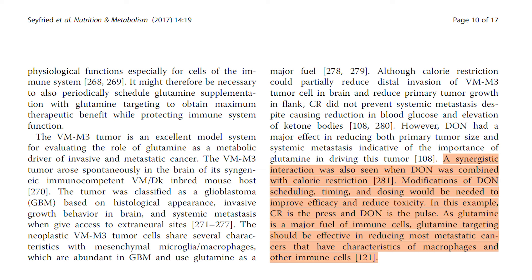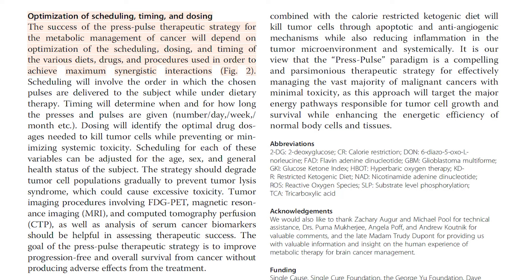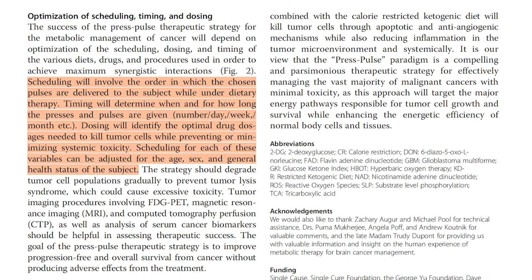As glutamine is a major fuel of immune cells, glutamine targeting should be effective in reducing most metastatic cancers that have characteristics of macrophages and other immune cells. The success of the press pulse therapeutic strategy for the metabolic management of cancer will depend on optimization of scheduling, dosing, and timing of the various diets, drugs, and procedures used in order to achieve maximum synergistic interactions. Scheduling will involve the order in which the chosen pulses are delivered to the subject while under dietary therapy. Timing will determine when and for how long the presses and pulses are given — numbers per day, per week, per month, etc. Dosing will identify the optimal drug dosages needed to kill tumor cells while preventing or minimizing systemic toxicity.